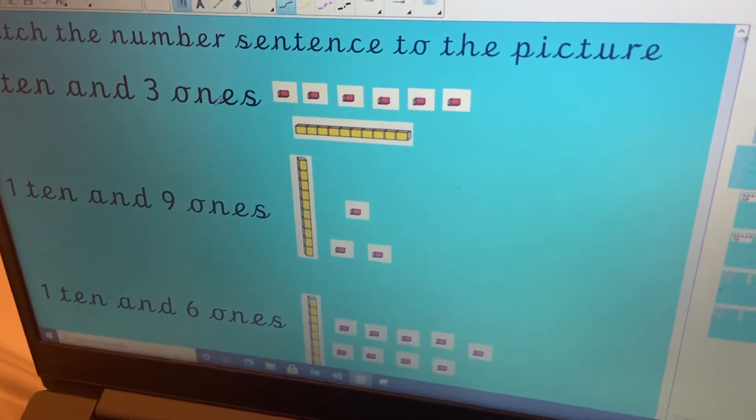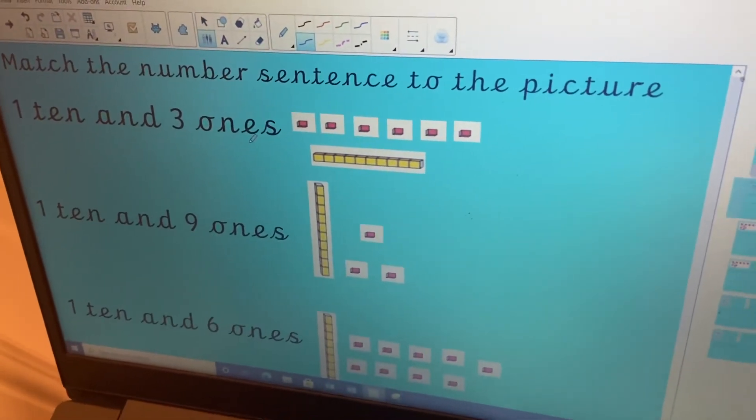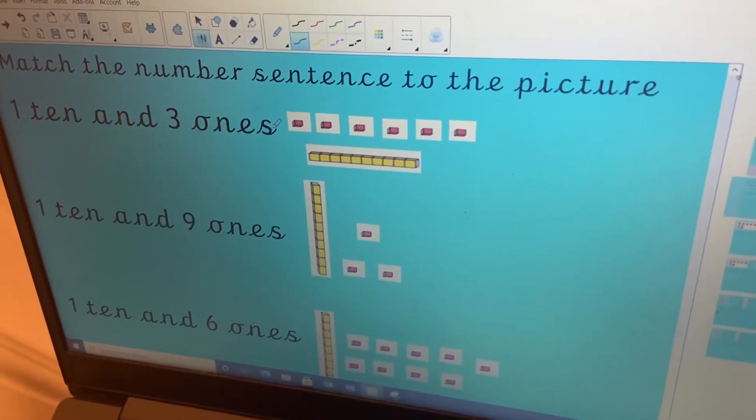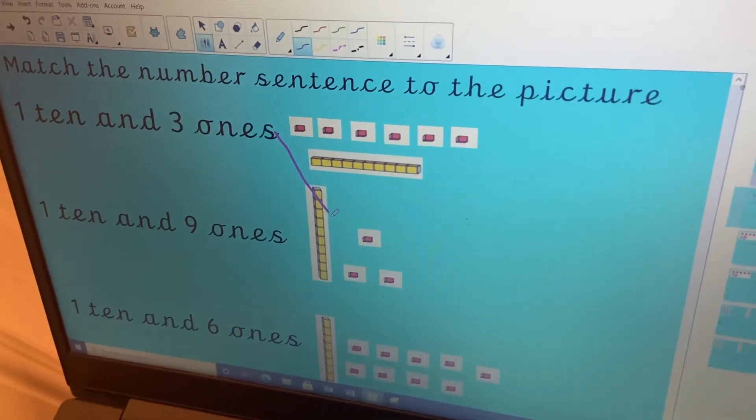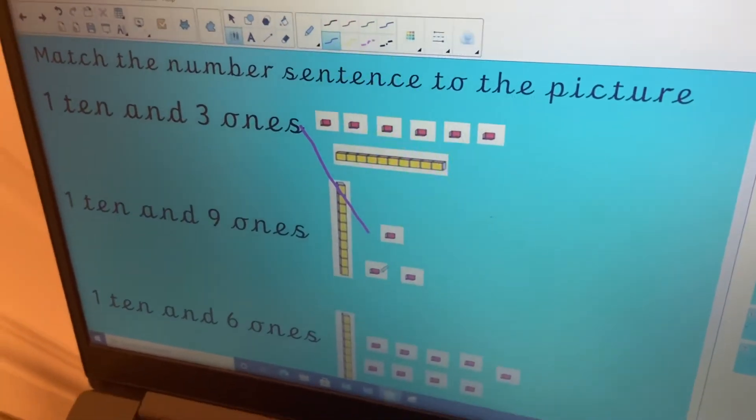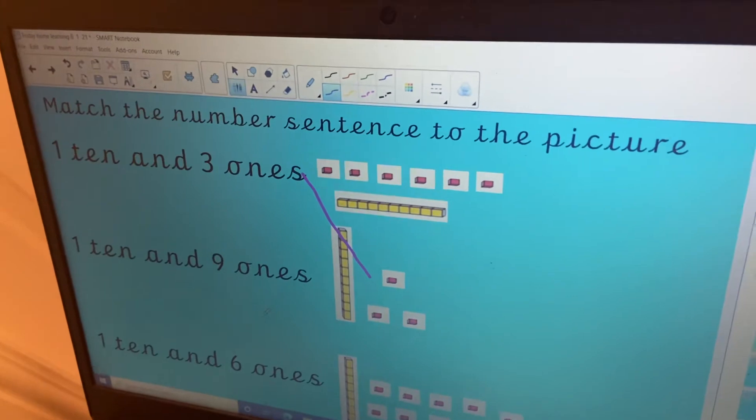So let's have a look and see. So here we've got one ten and three ones. So I'm having a look and I can see that that one here has got one, two, three. So I'm going to go with that one.